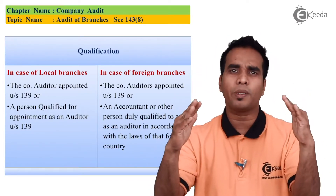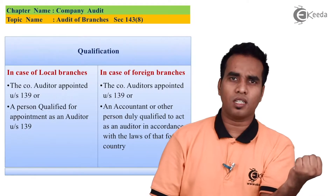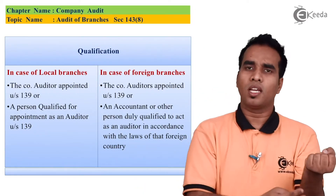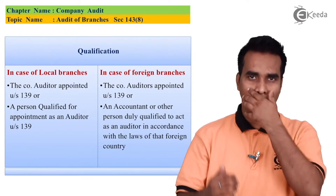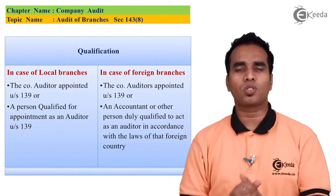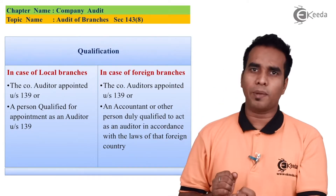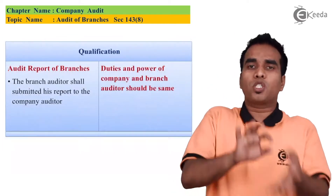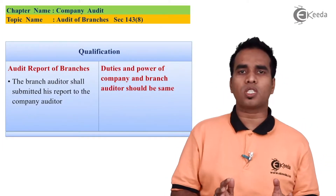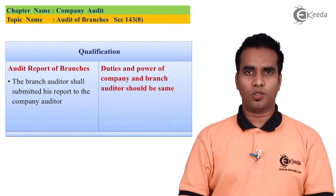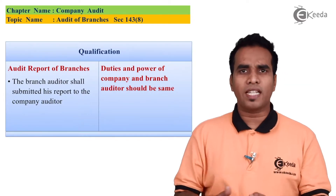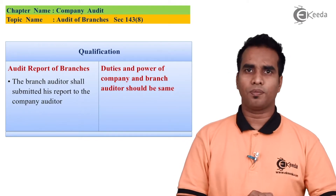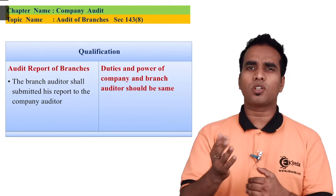So Branch Audit concept is divided into two points: Branch in India, and Branch outside India. For branches in India, it's the company auditor or any other CA. For branches outside India, it's the professional respected in their country. The branch auditor will submit their report to the company's main auditor, and the branch auditor's rights and duties will be the same as the company's auditor.